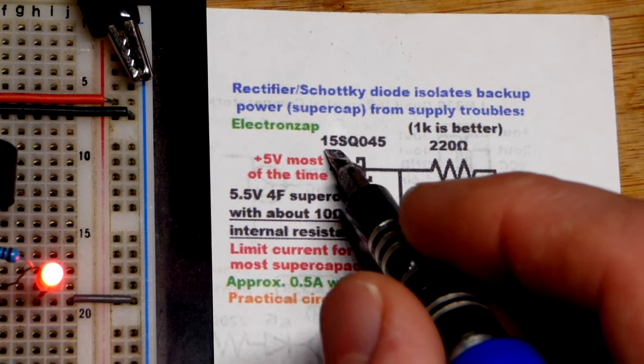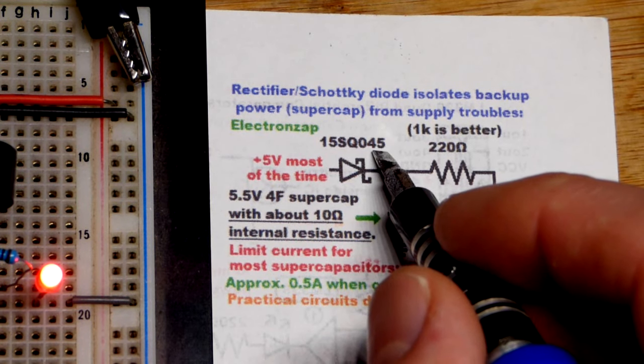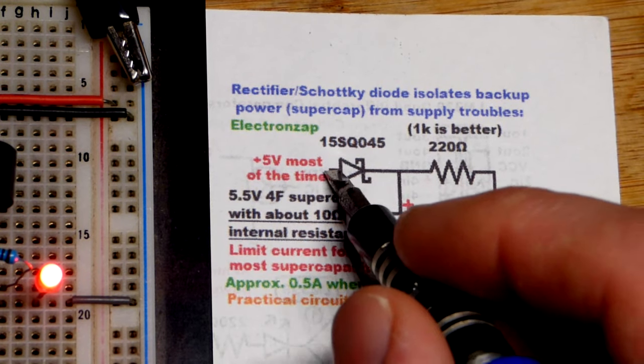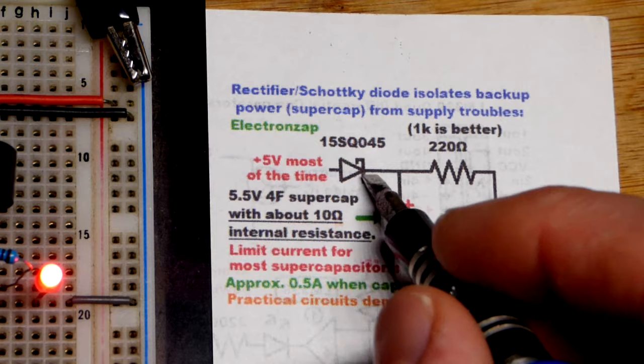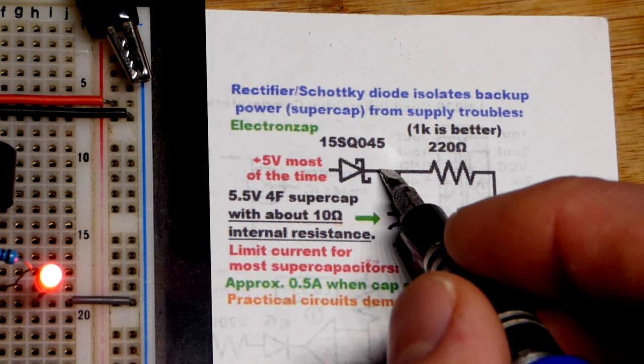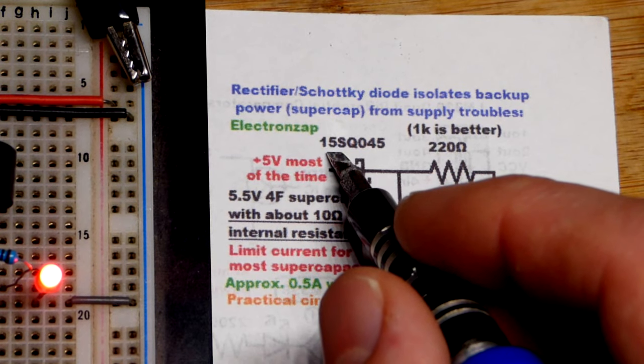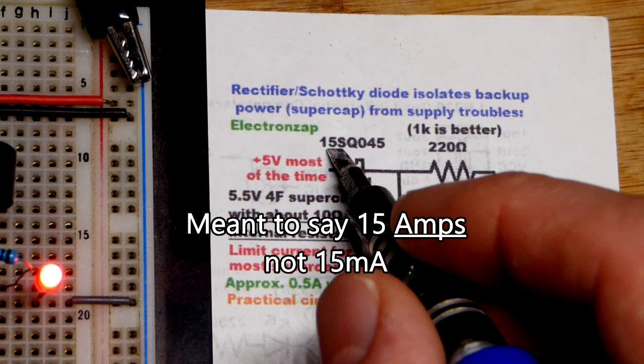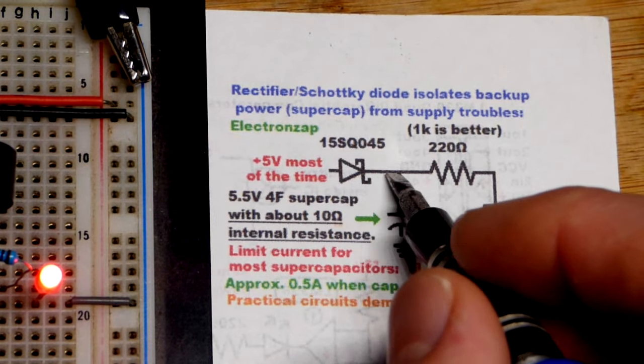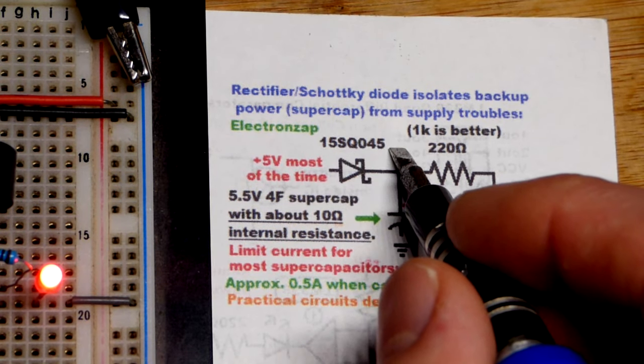Now we have the Schottky diode right there. This one can handle up to 15 amps, and when you put it reverse bias, up to 45 volts. It's been a long time since I looked at the data sheet for this, but that's what I remember. You're using it forward bias. Schottky means that it doesn't drop as much voltage as rectifier diodes that are 0.7 volts. This one's probably closer to like 0.3 volts, but that's at higher currents. This is like a maximum 15 milliamps of current.